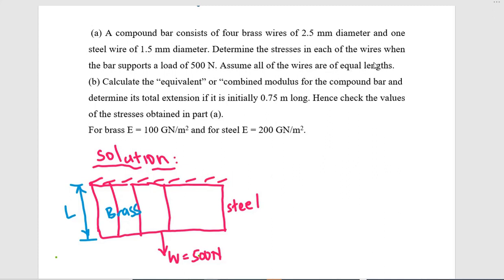Part B asks us to calculate the equivalent or combined modulus for the compound bar and determine its total extension if it is initially 0.75 meters long, then check the values of the stresses as obtained in Part A. Given: modulus of elasticity for brass is 100 GPa, and for steel is 200 GPa.